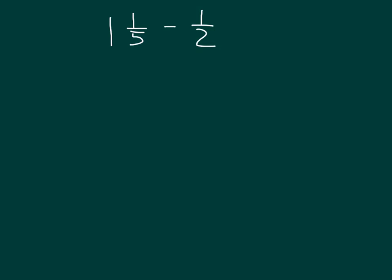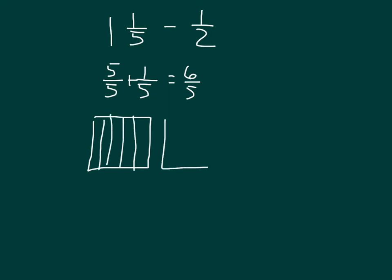Here we have 1 and 1 fifth minus a half. Let's model 1 and 1 fifth first. 1 and 1 fifth consists of that whole number 1, which is equal to how many fifths? Right, 5 fifths. And then we have another 1 fifth with it. So 5 fifths plus 1 fifth does equal 6 fifths. If we model it, draw vertical lines to model it. 2, 3, and 4. That's the 5 fifths. 1, 2, 3. Let's make this box a little bit bigger. And 4. That'd be the 1 fifth. And here we have 5 fifths plus 1 fifth, which does equal that 1 and 1 fifth.